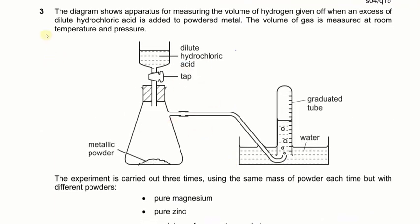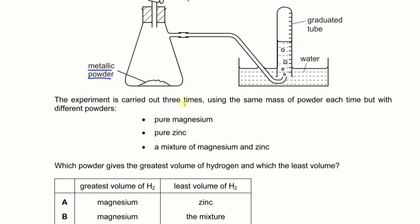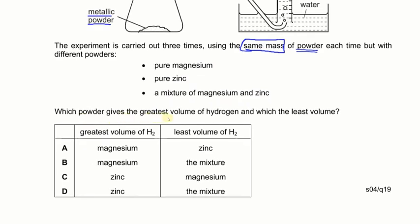The next question shows a diagram of apparatus for measuring the volume of hydrogen produced when excess dilute HCl is added to a powdered metal. The experiment was carried out three times using the same mass of powder each time, but different powders: pure magnesium, pure zinc, and a mixture of magnesium and zinc. Which powder gives the greatest volume of hydrogen, and which gives the least?